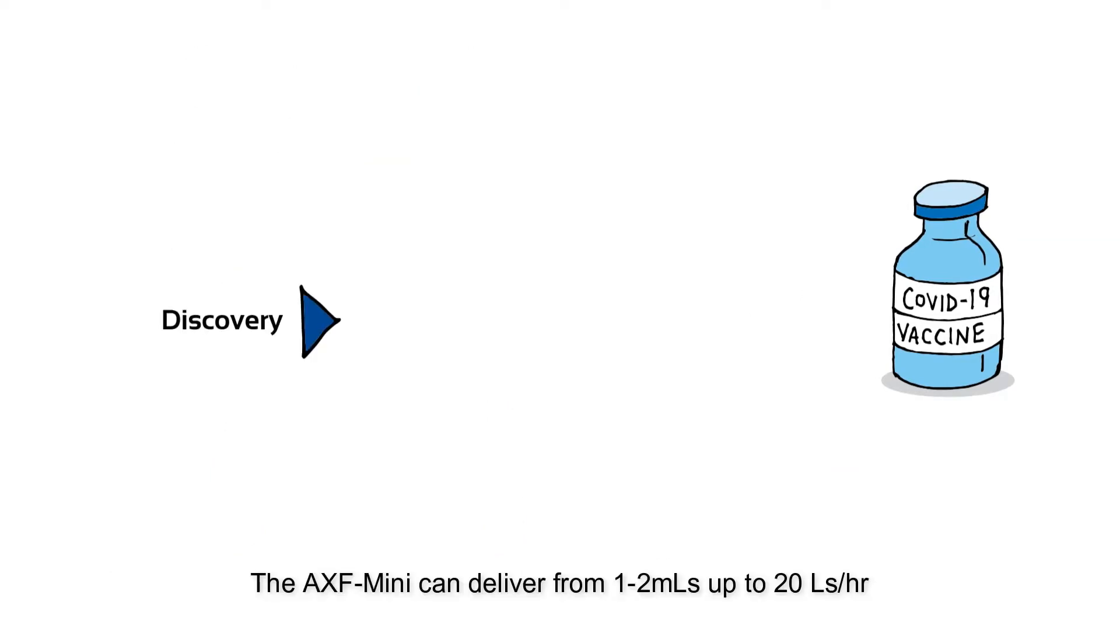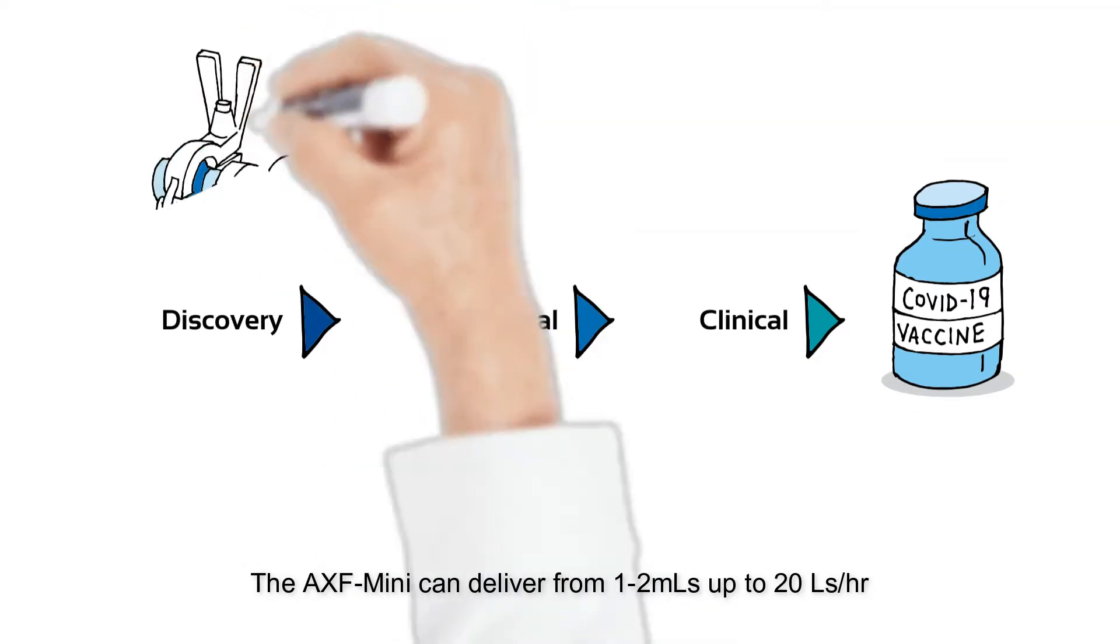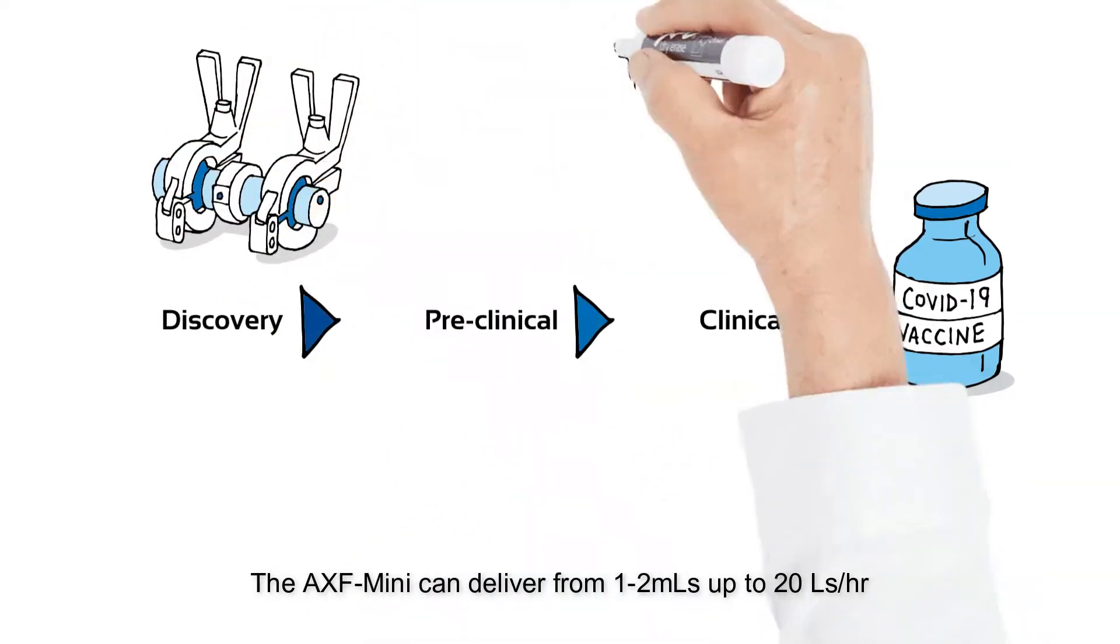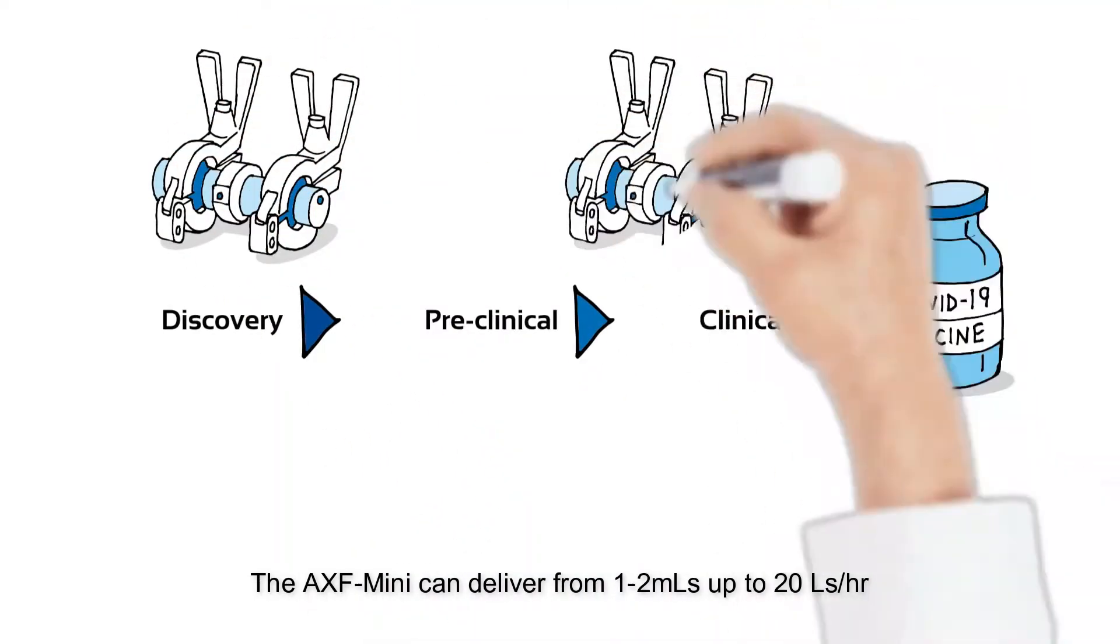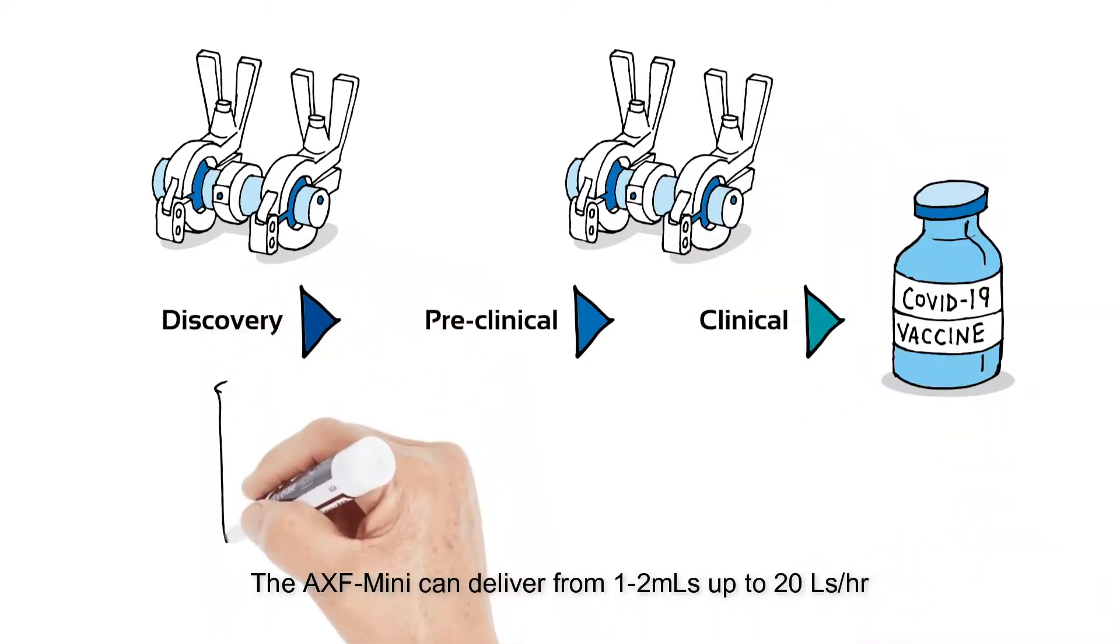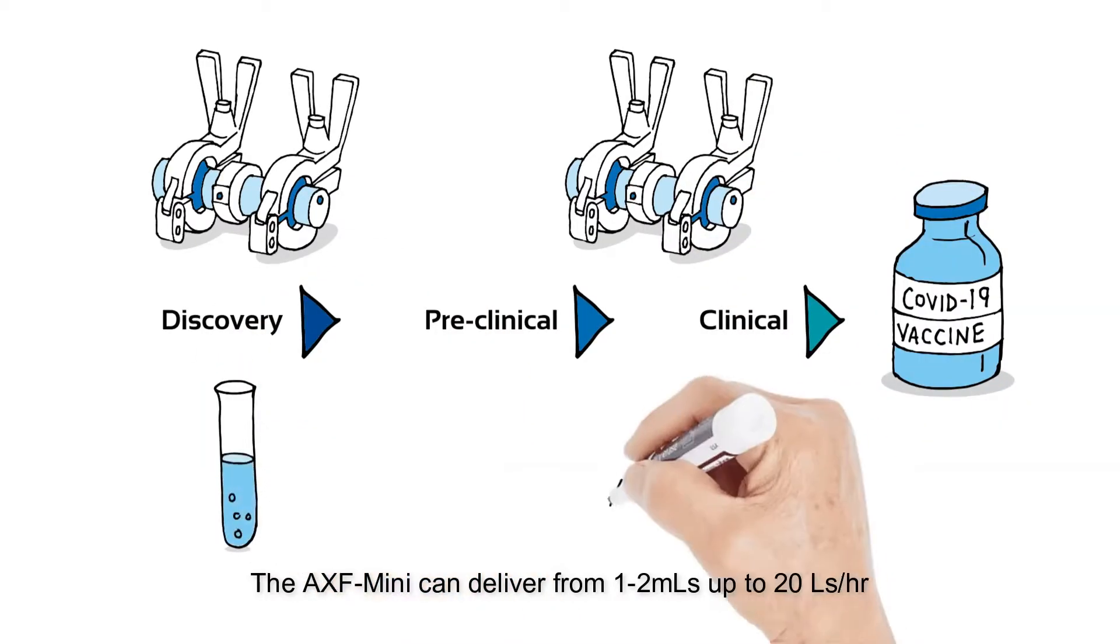As development continues to the pre-clinical phase, the output of an advanced cross-flow micro-mixing device with 100,000 pores can easily be increased from 1 to 2 milliliters up to 10 to 20 milliliters and beyond, to hundreds of milliliters as required.